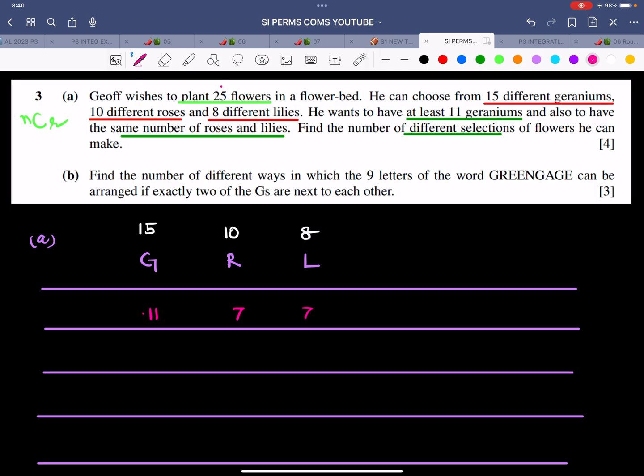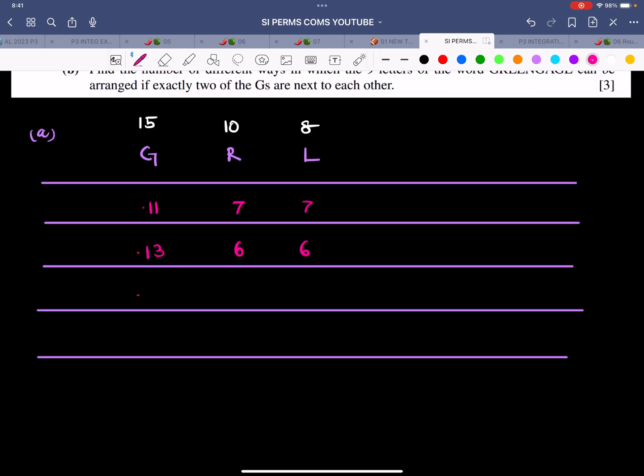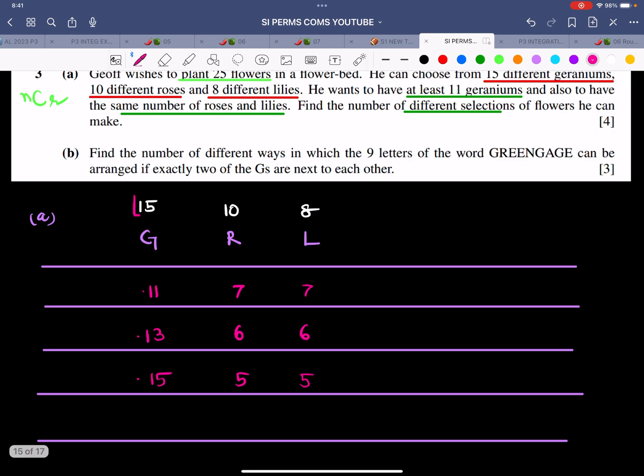If I choose the next number, which is 12, will it work out? I don't think so, because 25 minus 12 is 13, divided by 2 is 6.5. You cannot split a flower. So erase this option. If I write 8 and 8, that's 16, so 25 minus 16 gives me 9. But that's not correct because I need at least 11 geraniums. Increase to 13: 25 minus 13 is 12, divided by 2 is 6 each. Increase to 15: 25 minus 15 is 10, divided by 2 is 5 each. That's it, because the maximum number of geraniums we have is 15.